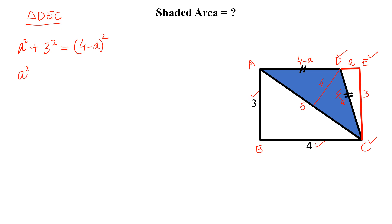we can write A square plus 9 is equal to 4 minus A into 4 minus A. We can write it like this. Now simplify it like this. So A square plus 9 is equal to 16 minus 8A plus A square.